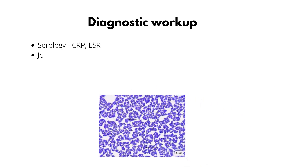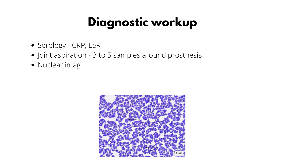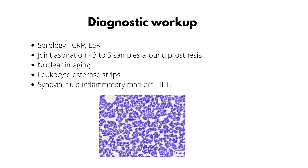According to the American Academy of Orthopaedic Surgeons, ESR and CRP are good first investigative choices due to their high sensitivity. The next step would be to aspirate the joint fluid and culture it; taking 3–5 samples from different locations around the joint will increase your chances of getting a positive culture result. If still not successful, additional nuclear imaging tests may be ordered. Another simple test is leukocyte esterase strips or dipsticks in synovial fluid, though it should be used with caution as blood-stained fluid may alter the results. Synovial fluid inflammatory markers such as interleukin-1 and interleukin-6 are also useful tests.